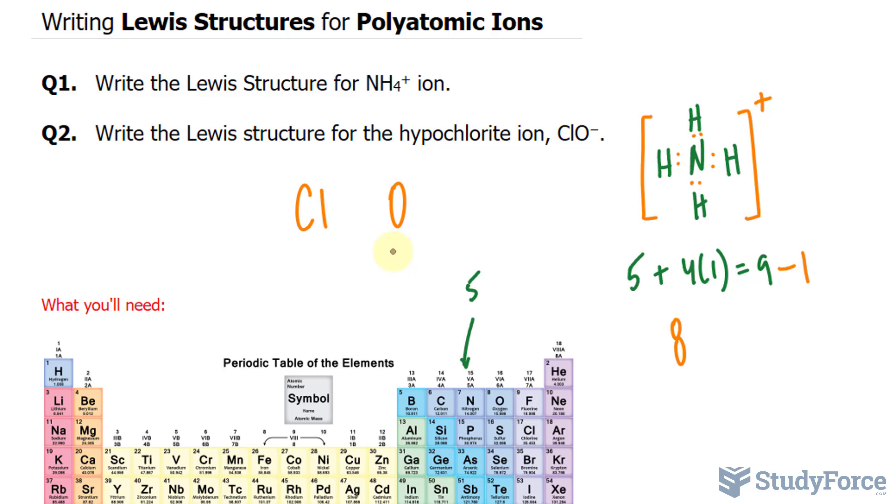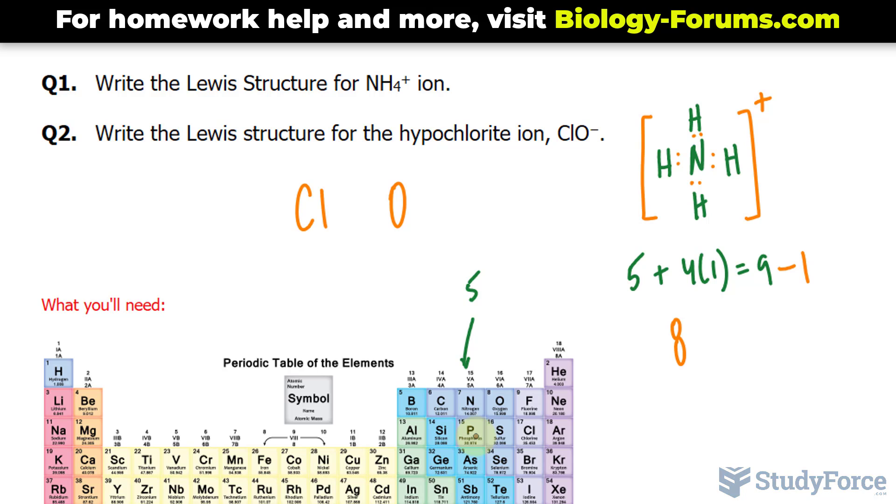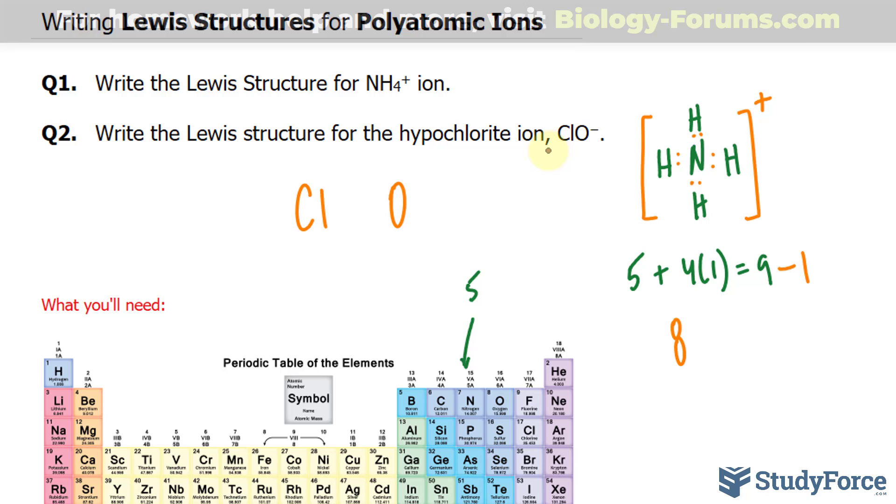The number of valence electrons for chlorine is seven. It's in the seventh column right there. And the valence electrons for oxygen is six. It's in the sixth column. So seven plus six is 13. And notice that this is negative, meaning that another electron has been applied. So we're working with 14 electrons.